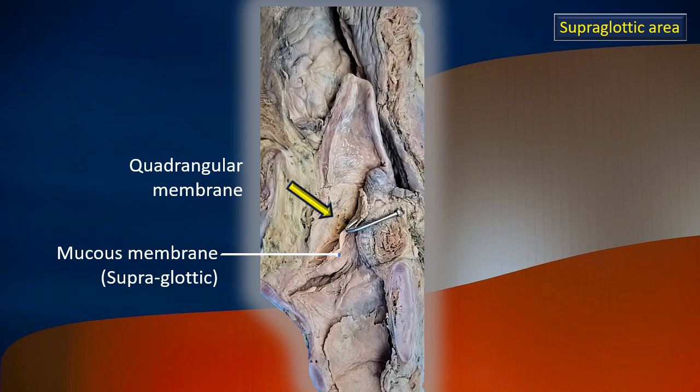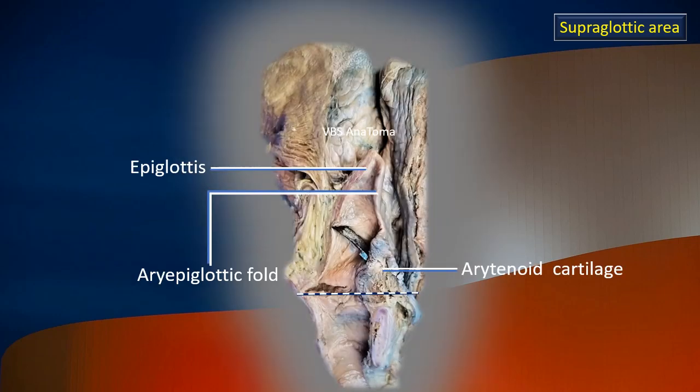That part is called the quadrangular membrane. Recap: epiglottis, arytenoid cartilage, and connecting the two is the aryepiglottic fold.